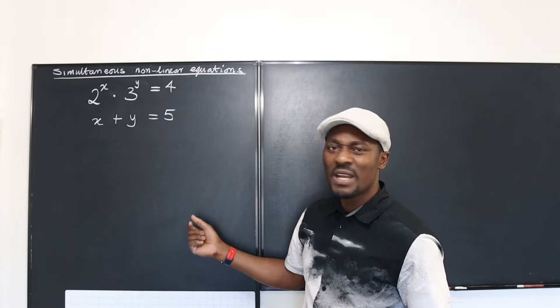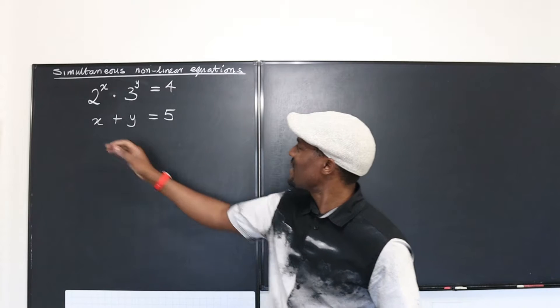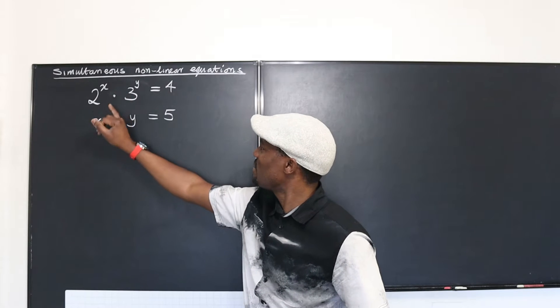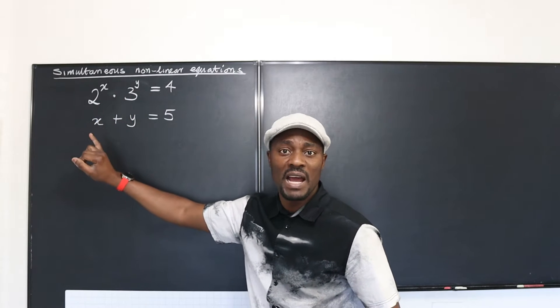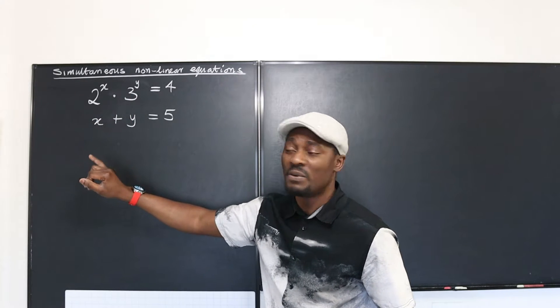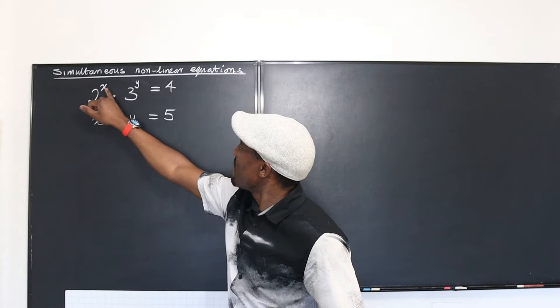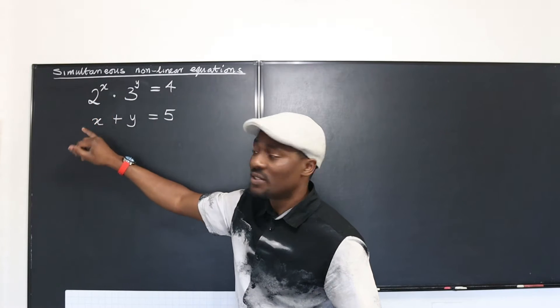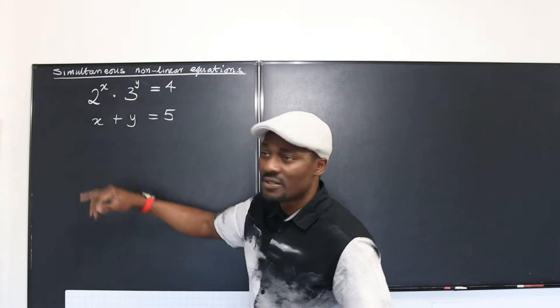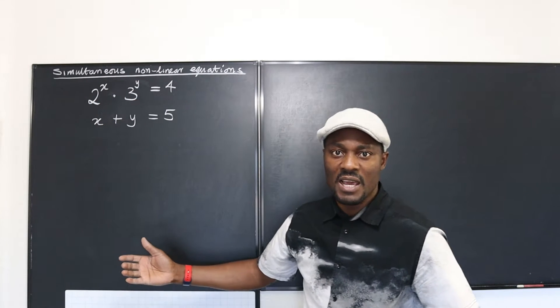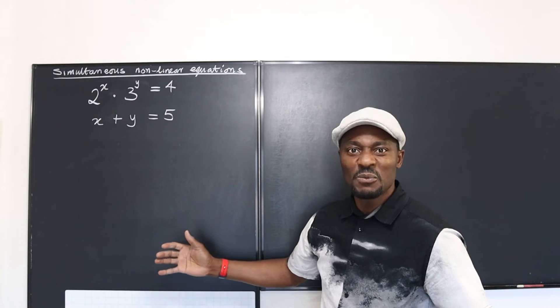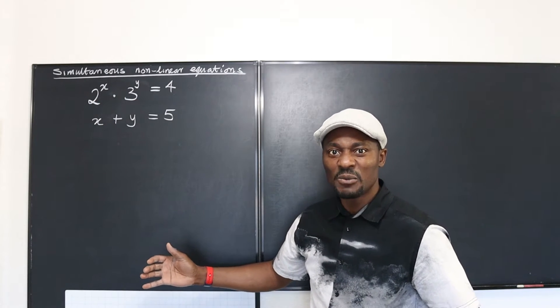What can we do? This has x in the exponents. You can't apply any law of exponents because the exponents are not the same, and the bases too are not the same. What shall we do?